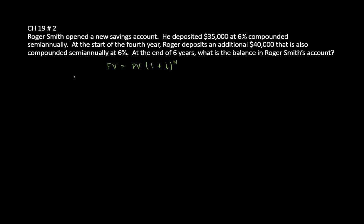So what is PV? PV is given to us as the $35,000 that he deposited. Now, i is going to be 6%, but it's not going to be 6% because it's compounded semi-annually. So we're going to divide that 6% by 2, which gives us 3% or 0.03 as our interest rate.